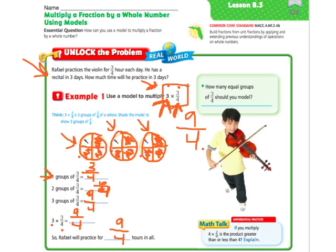So for your models, you would draw this model, make it into fourths, and you'd have to do that same model whatever your whole number is. In this case, it's 3 times. So that's how you multiply a fraction by a whole number using models.